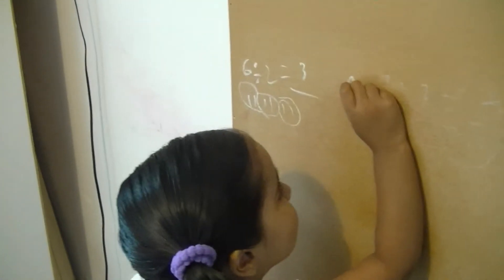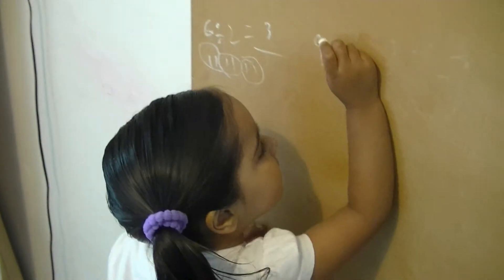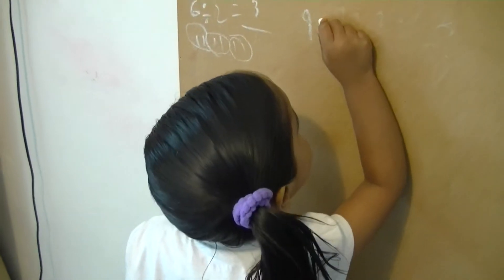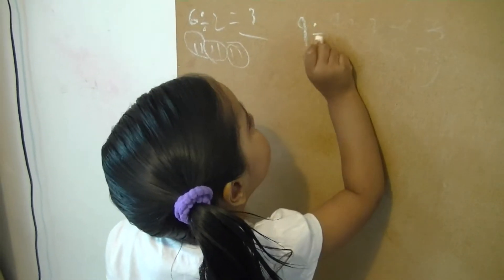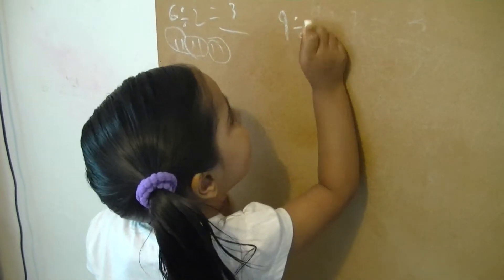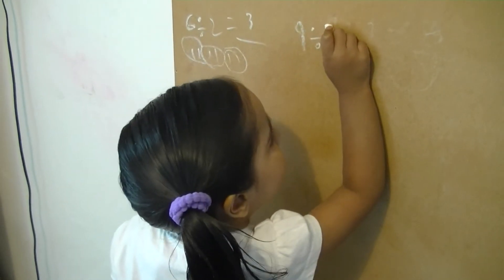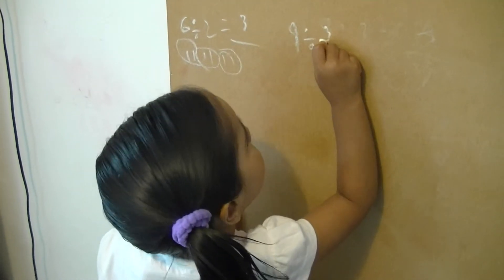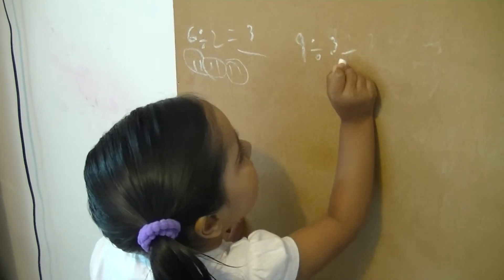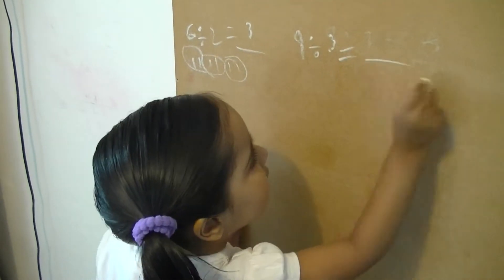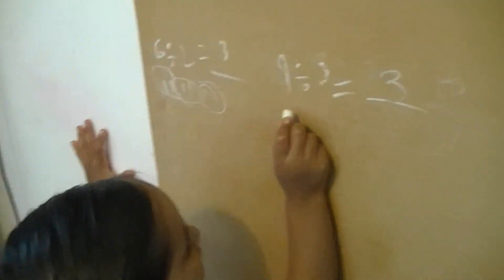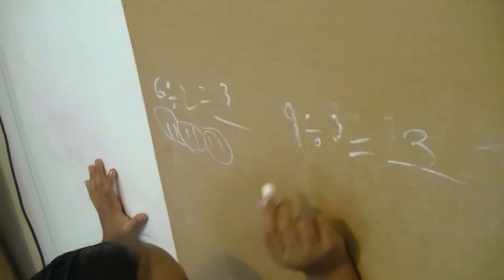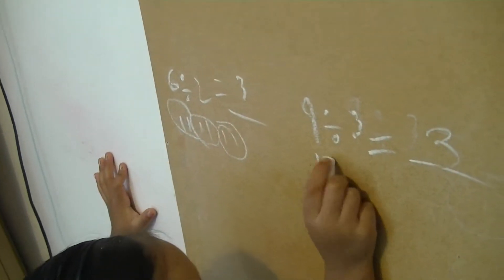I can explain this. Nine divide three makes three. How? These are the nine lines.